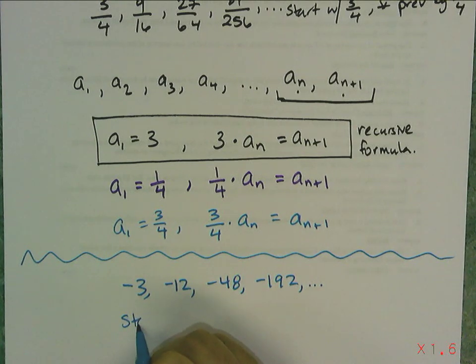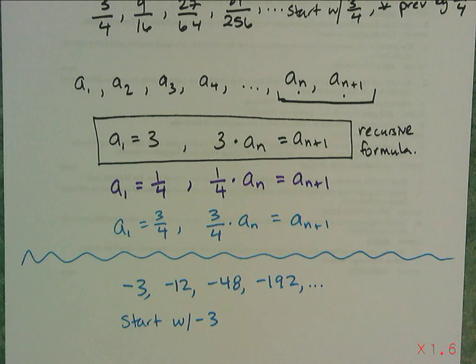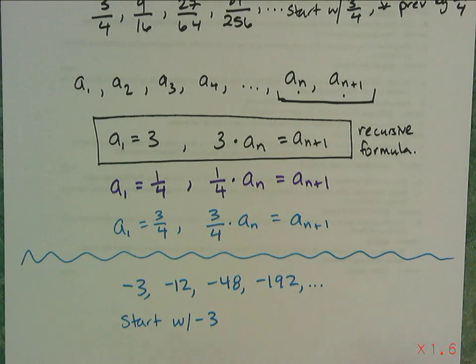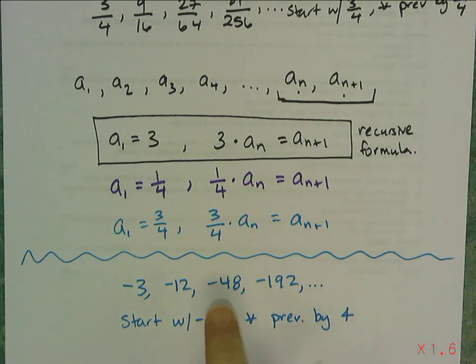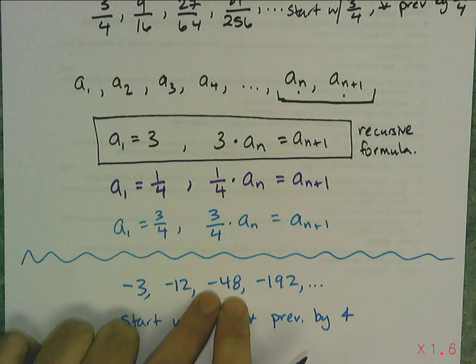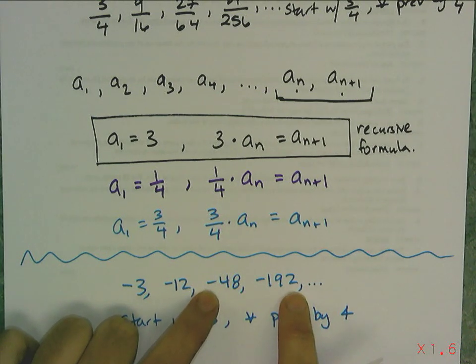I know it starts with a -3. And how do I turn a -3 into a -12? I'm going to multiply the previous by 4. And does that hold up? Yes, because -12 times 4 is -48, and -48 times 4 is -192.